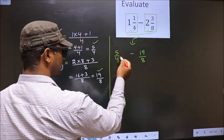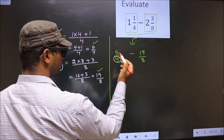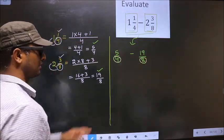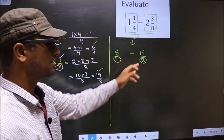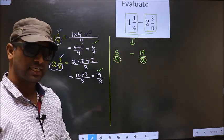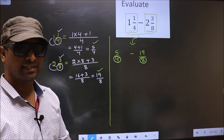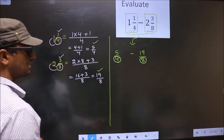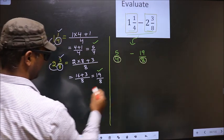In this fraction, the denominator is 4. Here the denominator is 8. The denominators are not same. Whenever the denominators are not same, we should take LCM of them. So, the LCM of 4 and 8.